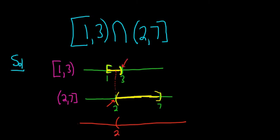Here the 3 is not included, but it is included here. So they don't have it in common, so we don't include the 3. So (2,3). Everything in between the 2 and 3, they do have in common, right? So the answer would be this region here.